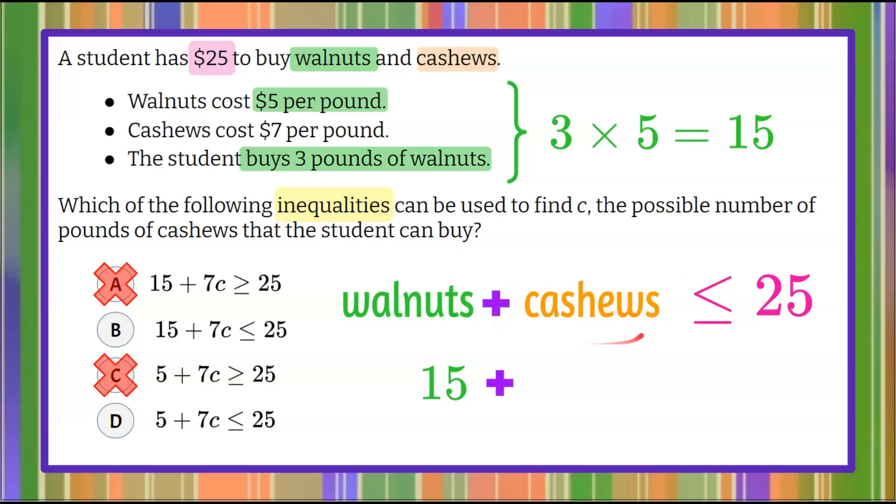And then we've got to go and look at the information about cashews. So $15 on walnuts. How much money on cashews? Up here it says that cashews cost $7 per pound. So we want to find the number C. We don't know how many pounds that the student bought, but we want to know how many are possible.